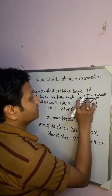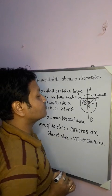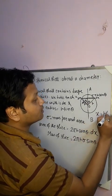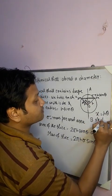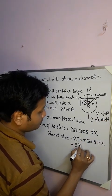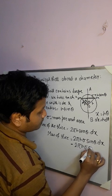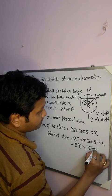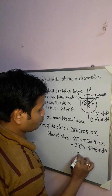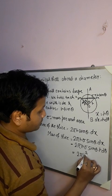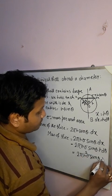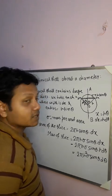Since this arc length dx equals R dθ, we substitute dx = R dθ. So the mass of the slice becomes 2πR²σ sinθ dθ.